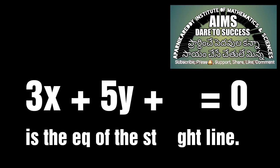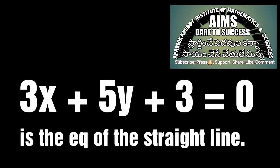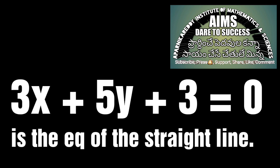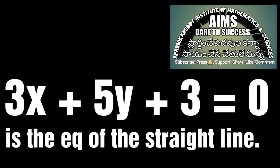Taking out the common negative sign, we get 3x + 5y + 3 = 0 as the equation of the straight line.